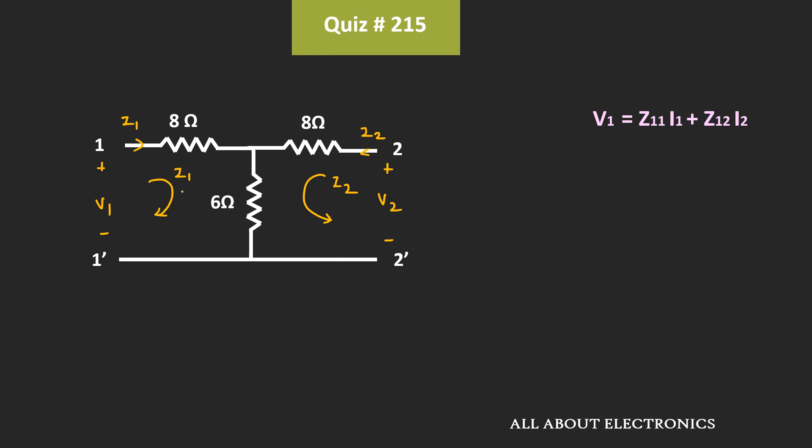So to find the Z parameters, let's apply the KVL equation in the first loop. So applying the KVL equation, we can write voltage V1 is equal to 8 ohm times I1 plus 6 ohm times (I1 plus I2). That means V1 is equal to 14 times I1 plus 6 times I2. And if we compare this expression with the standard Z parameter expression, then we can say that here Z11 is equal to 14 ohm while Z12 is equal to 6 ohm.